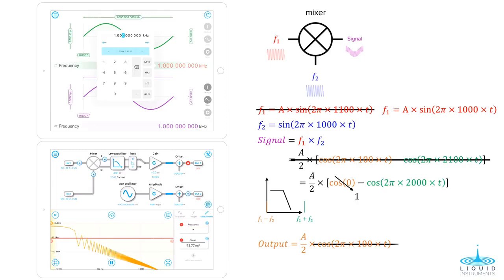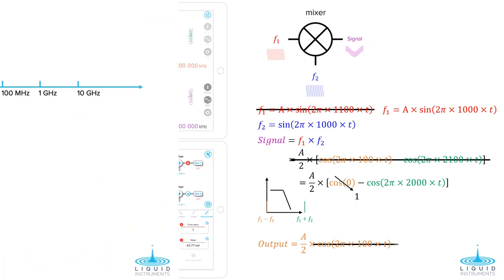This is the lock-in amplifier function, and with the local oscillator tracking the signal of interest, we can extract the original signal amplitude from a background of noise.